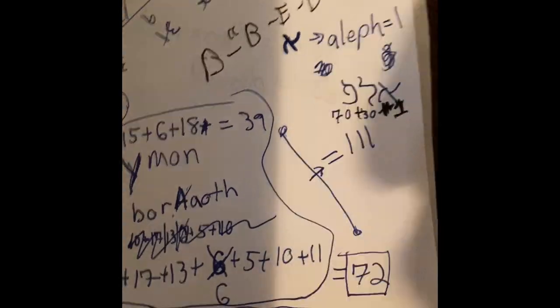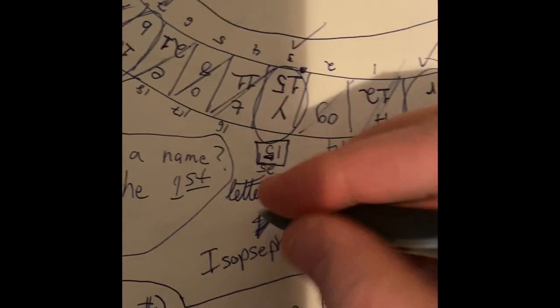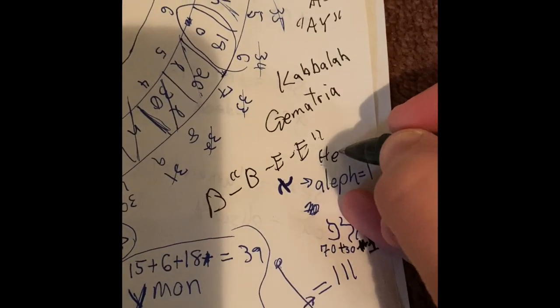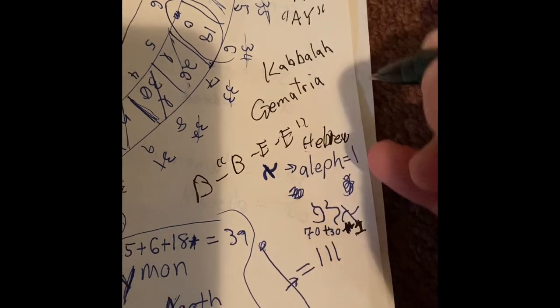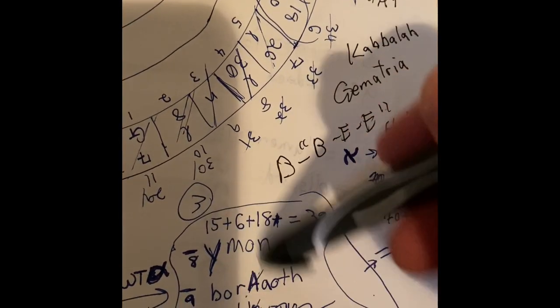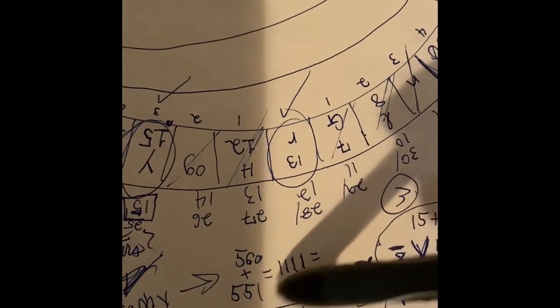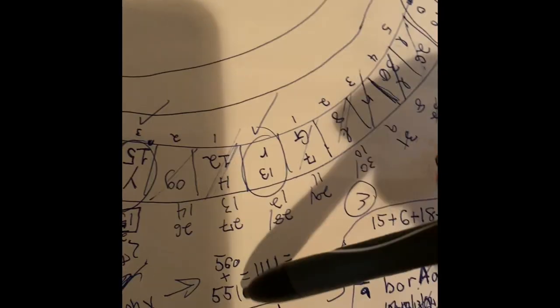Regardless of whatever other tradition you're coming from, let's get back to it here. Because there's also another numerological system known as isopsophy — that's the Greek version of this. If you are Greek, I'm just going to write over everything. The Greek numerological system is known as isopsophy, and it turns out that if you add the values of the Greek equivalent of these letters and numbers, the first one, Iman, comes to 560, and the second name, Boraoth, comes to 551.